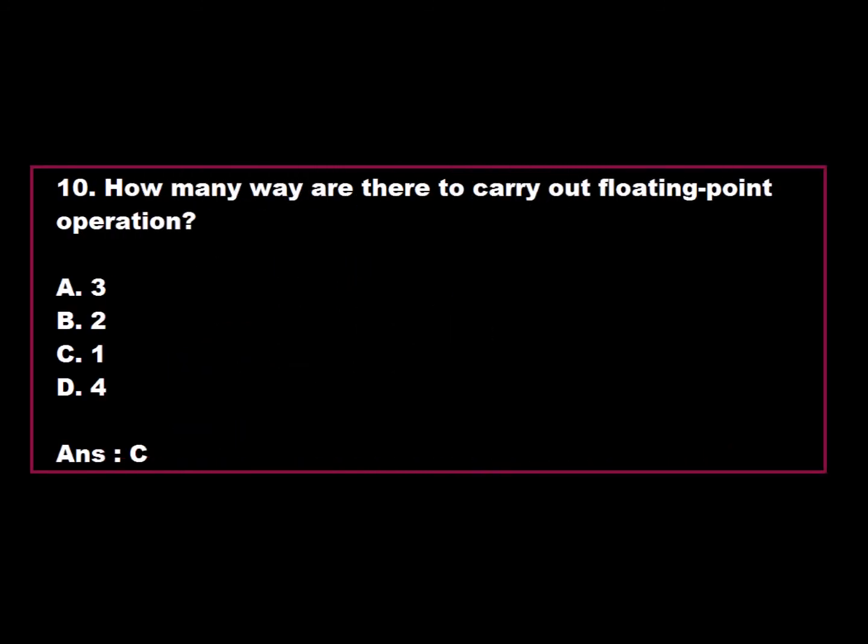Question 10: How many ways are there to carry out a floating point operation? Option A: 3. Option B: 2. Option C: 1. Option D: 4. Option C is correct. There is only one way to carry out a floating point operation. Hence, Option C is correct.